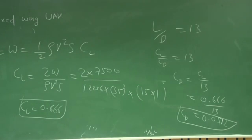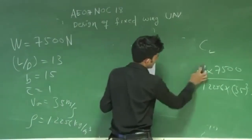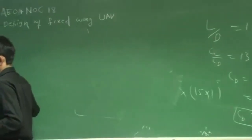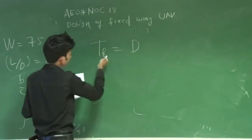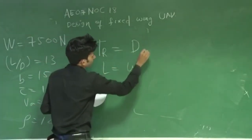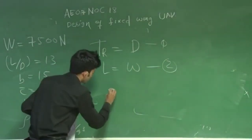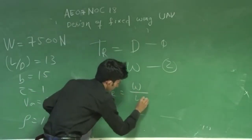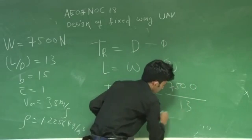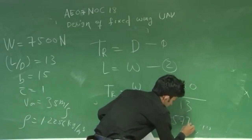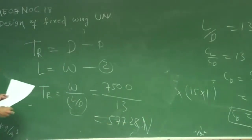The third question asks for the value of thrust required. At steady level flight, thrust balances drag and lift equals weight. Manipulating these two equations, thrust required equals W divided by (L/D). So W is 7500 and L/D is 13, giving an answer of 577.28 Newton. This is your thrust required.